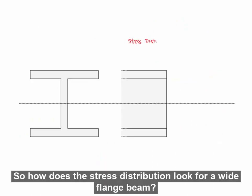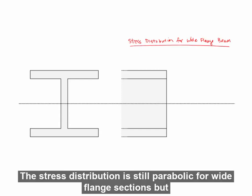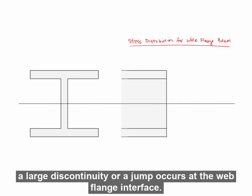So how does the stress distribution look for a wide flange beam? The stress distribution is still parabolic for wide flange sections, but a large discontinuity, or a jump, occurs at the web flange interface.